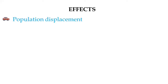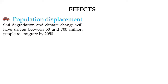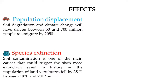Soil degradation and climate change are predicted to have driven between 50 and 700 million people to emigrate by 2050. Furthermore, soil contamination is one of the main causes that could trigger the sixth mass extinction event in history. The population of plant vertebrates fell by 38 percent between 1970 and 2012.